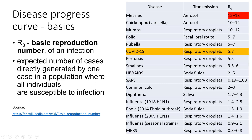This list gives you the R0 of many common diseases. You can see that some, like measles, spread very quickly, as does chickenpox. COVID-19 is not far behind. This indicates how easily the pathogen spreads.